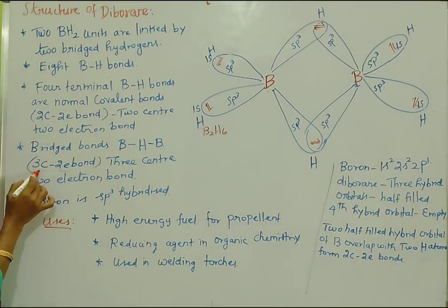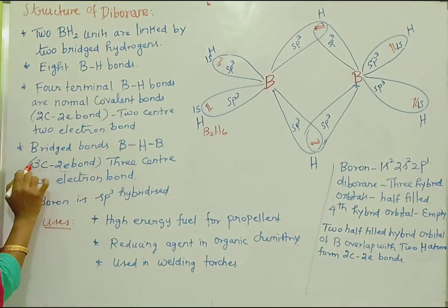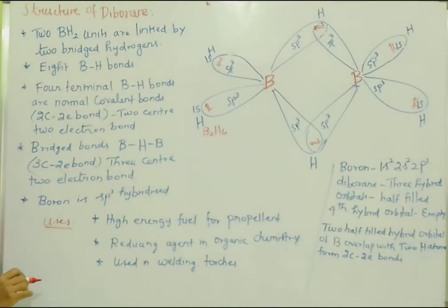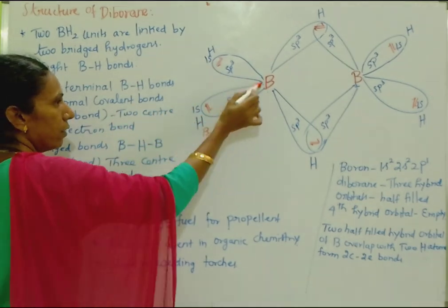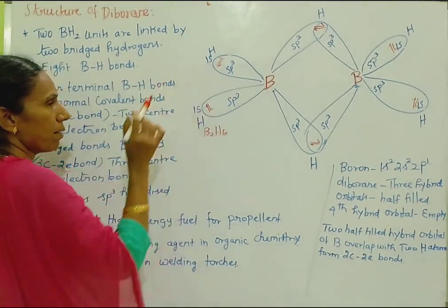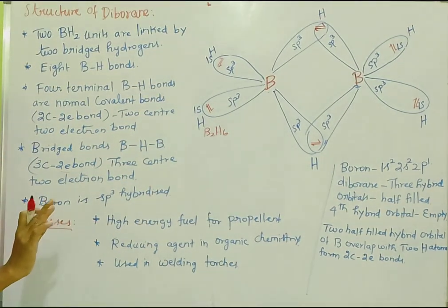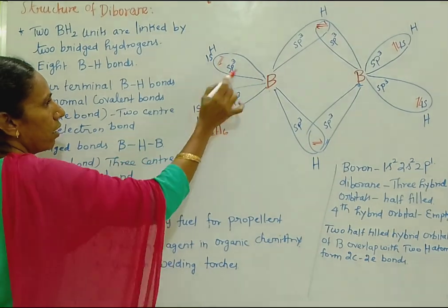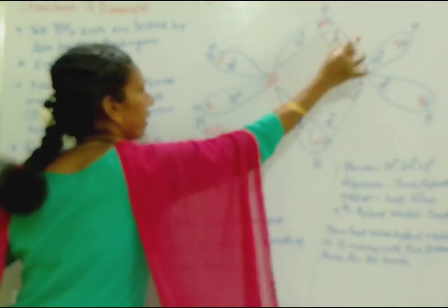So this is the 3-center bond. Three atoms — B-H-B — share two electrons. In contrast, in a normal two-center, two-electron bond, only two atoms share the two electrons. So the BHB bridging bond is a 3-center, 2-electron bond.